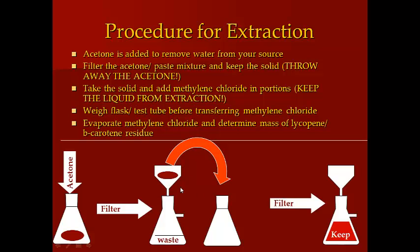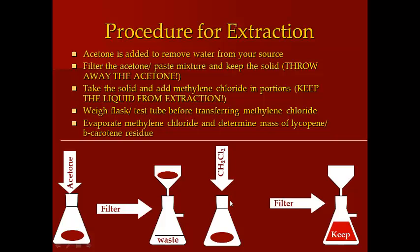Next, take the solid and put it into a clean Erlenmeyer flask, then add 25 milliliters of methylene chloride. Swirl it, and you'll notice immediately that the methylene chloride is going to go from clear to a reddish color — that's what you want. You're going to do a filtration, then add 10 additional milliliters of methylene chloride and swirl for about five minutes, then filter again. Then add another 10 mL of methylene chloride, swirl, and filter again. At the end of the methylene chloride extraction, you should have 35 milliliters of lycopene extract.